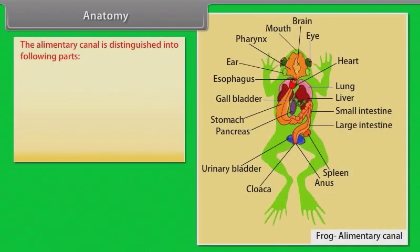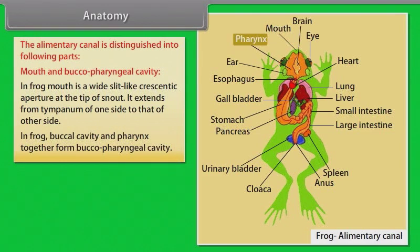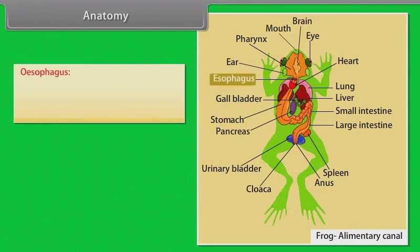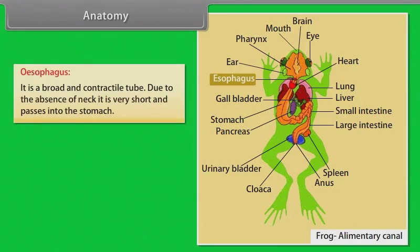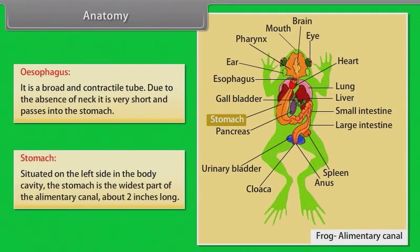The alimentary canal of the frog is distinguished into the following parts. The mouth is a wide, slit-like, crescentic aperture at the tip of the snout, extending from the tympanum of one side to the other. In the frog, the buccal cavity and pharynx together form the buccopharyngeal cavity. The posterior part of the buccopharyngeal cavity represents the pharynx, which is perforated by two apertures; the wide folded aperture in the middle is the gullet, which opens into the oesophagus. The oesophagus is a broad, contractile tube that is very short due to the absence of a neck, and passes into the stomach. The stomach is situated on the left side in the body cavity and is the widest part of the alimentary canal, about two inches long.